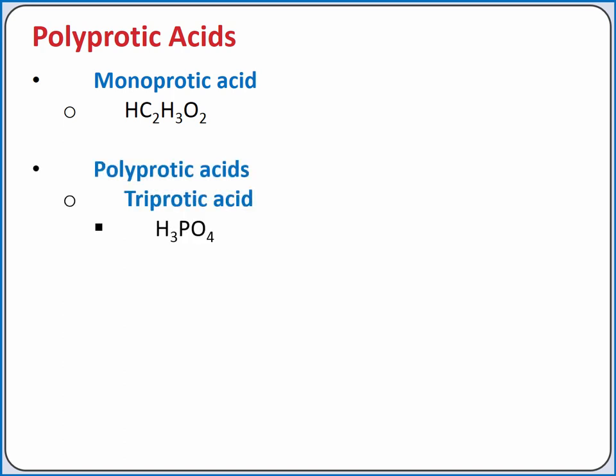Polyprotic acids have more than one ionizable hydrogen atom. For example, phosphoric acid has three ionizable hydrogen atoms, so it's called a triprotic acid, and its formula is H3PO4. A diprotic acid has two ionizable hydrogen atoms. Sulfuric acid is an example of a diprotic acid.